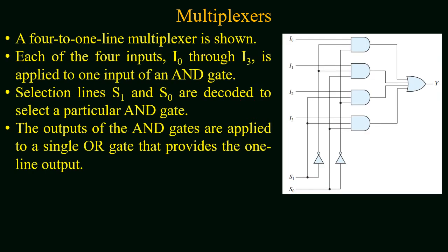After the 2-to-1 line multiplexer, we will study a 4-to-1 line multiplexer as shown in the figure. In this case we have four data inputs from I0 to I3 and each data input is connected to one of the AND gates. As we have four data input lines, 4 equals 2^2, so in this case we will have two selection lines. The selection lines S1 and S0 are decoded to select a particular AND gate. The output of the AND gates are applied to a single OR gate that provides the one-line output.